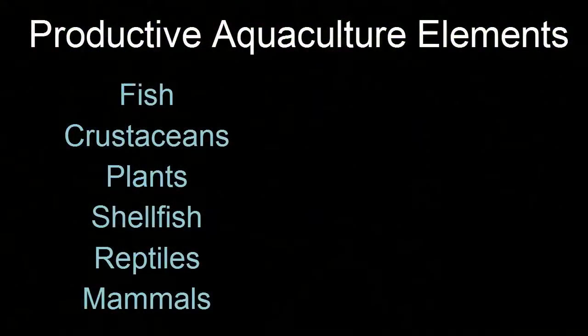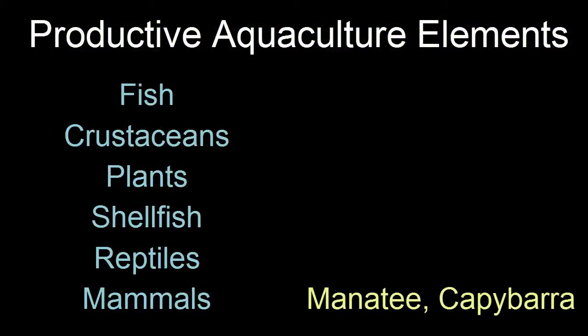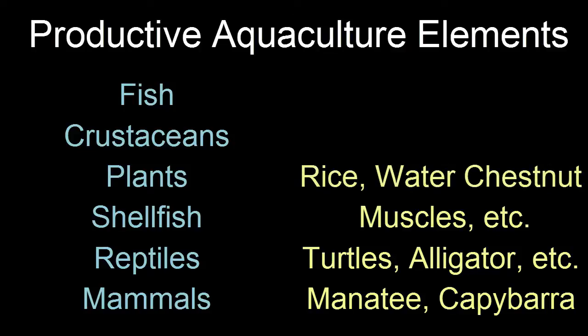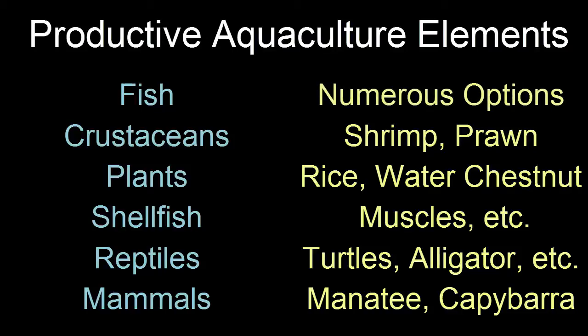All of these can be productive or destructive elements to a design, which is why we need to understand their purpose and roles and incorporate them appropriately. Looking at species in reverse: mammals can include the manatee or the capybara, the largest rodent, which is aquatic. Reptiles include turtles, alligators, and crocodiles. Shellfish includes mussels. Plants such as rice, lotus, and water chestnut can be incorporated. Crustaceans such as shrimp, prawns, and yabbies, and numerous varieties of fish can all be part of this type of system.